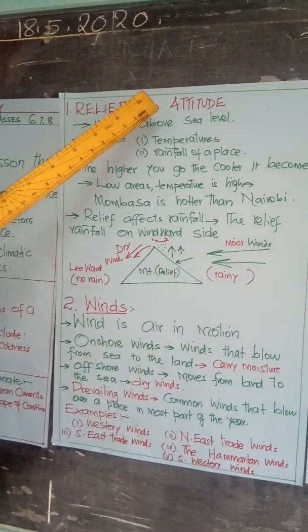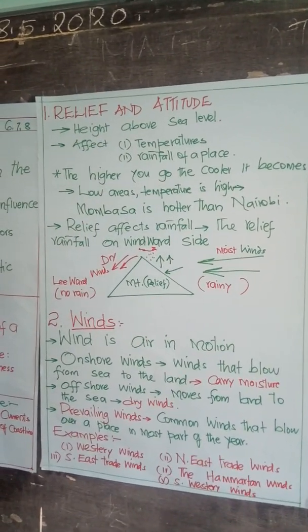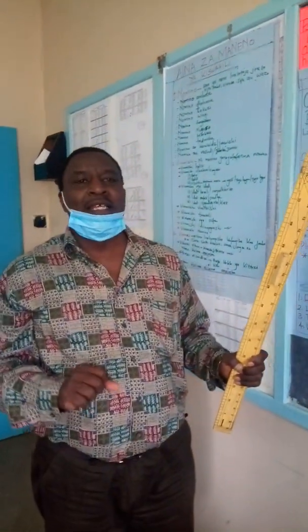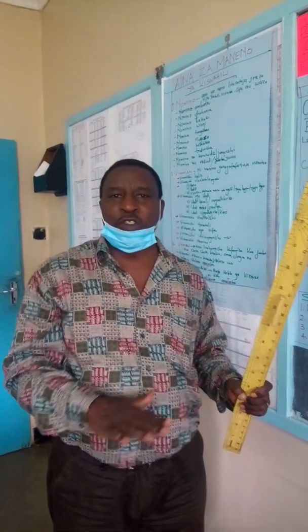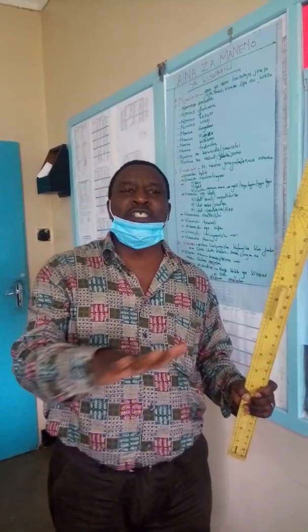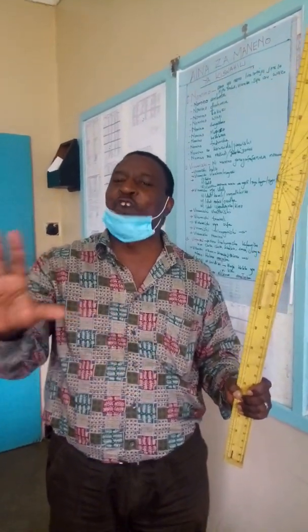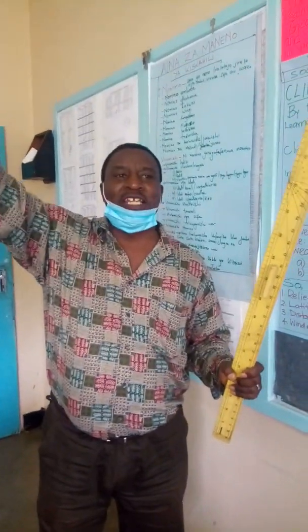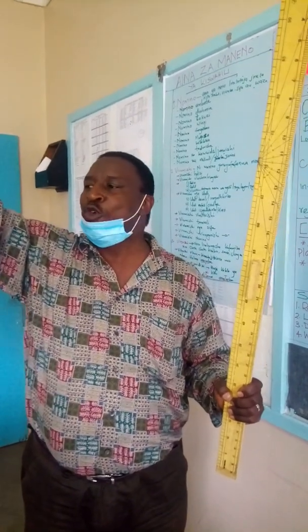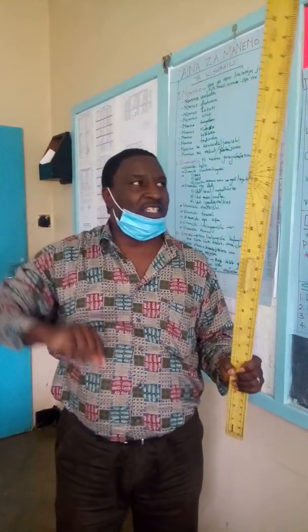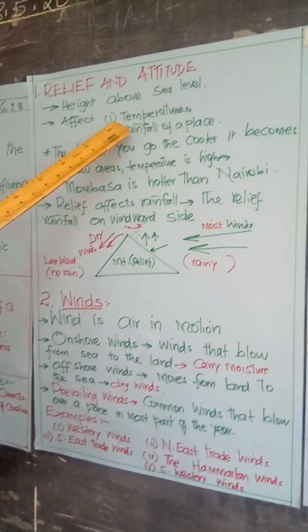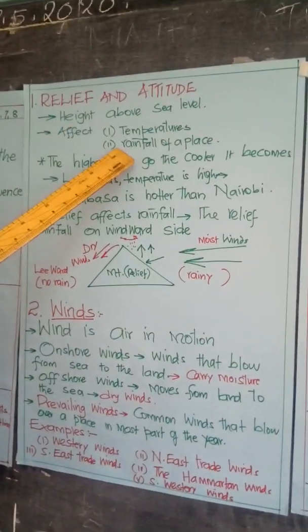Relief and altitude simply talks about height above sea level. In Mombasa you are very close to sea level — it is almost zero, about zero to five meters above sea level. At the top of Mount Kenya it is 5,100 meters above sea level. So this will affect temperatures and rainfall over the place.